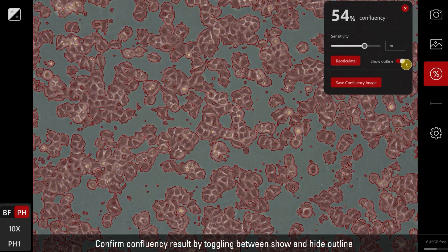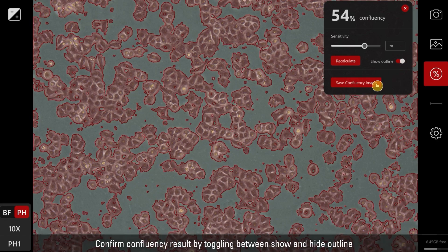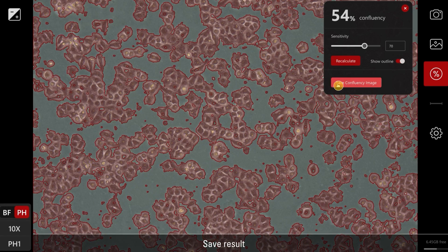Confirm confluency result by toggling between Show and Hide Outline. Save result.